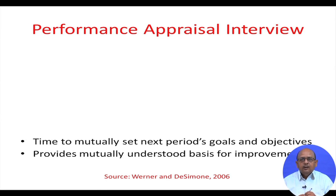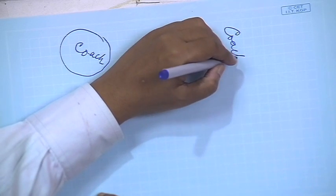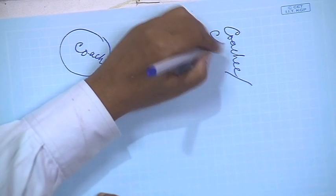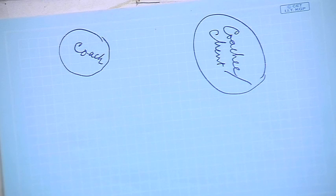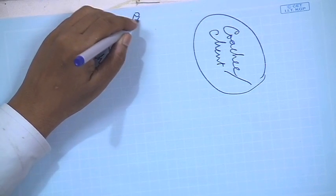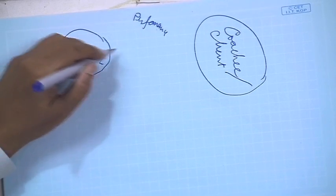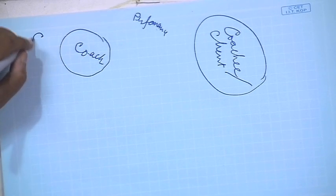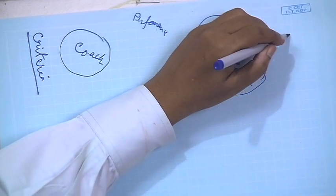You are not only going to evaluate the performance of the coachee, but also the performance of the coach. On one side you have the coach, and on the other side you have the coachee or client. Both the coach and the client have to be evaluated, their performance needs to be assessed, and you need to identify certain criteria for evaluation — the criteria being different in both cases.